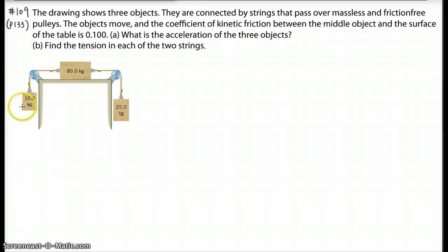There's two strings and then two objects that go over the pulley left and another one on the right. So obviously you can see this block, 10 kg and 25 kg here, so the object is going to move.